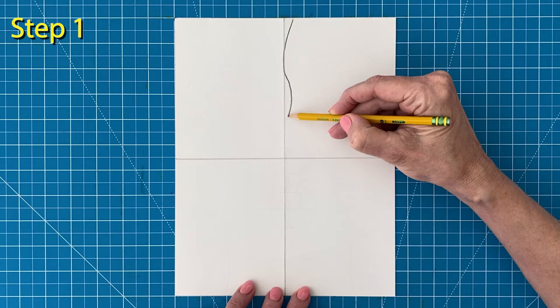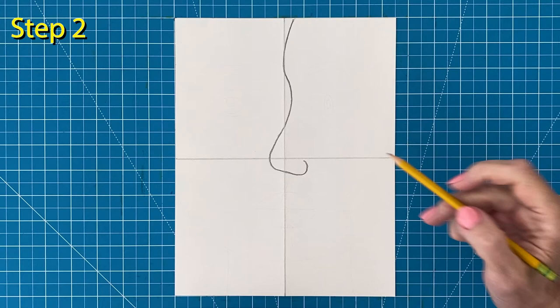Step number one: To start the profile side of the face, begin at the top and draw the forehead and the nose. Step number two: Continue down drawing the mouth and the chin.